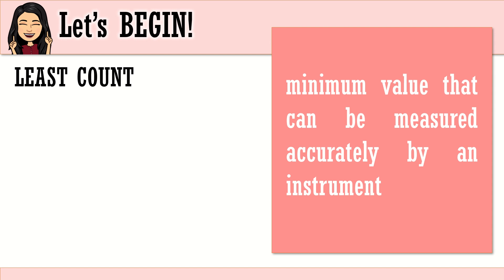Let's begin our lesson proper. Are you ready? Let's talk about least count. Do you know the meaning of least count? Well, least count is defined as the minimum value that can be measured accurately by an instrument. Or in other terms, it is the measurement or the difference between two markings in your measuring tools. Now, for you to fully understand what I'm saying, try to look at this measuring tool. This is a ruler, right?